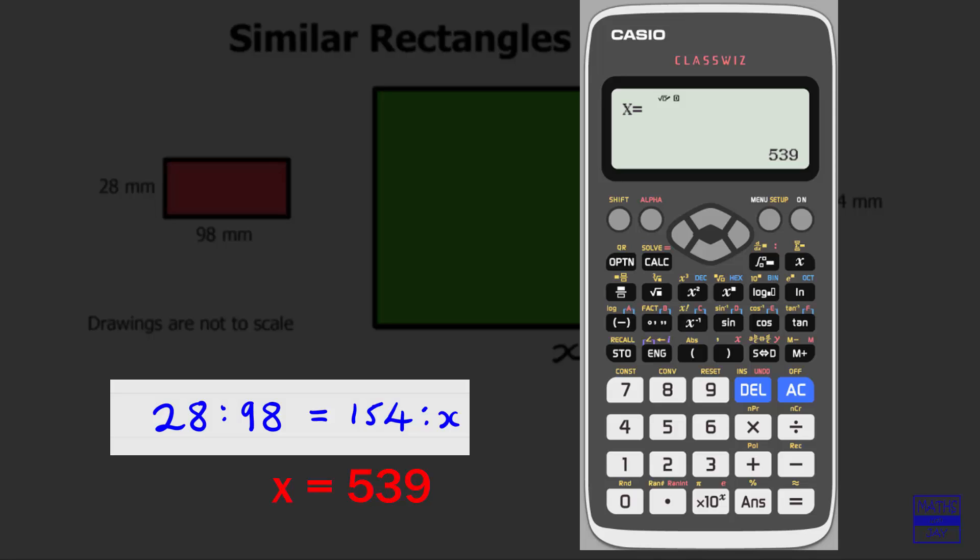Then equals again gives us the answer for x. We found that our missing side is 539, so that's bigger than the other side on that rectangle, so likely we've done the calculation the right way round.